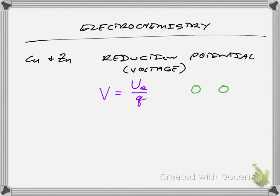Just like if we had two objects they have gravitational potential energy between them — using the example of the earth and a ball, that ball-earth system has gravitational potential energy so long as there are two masses. But if we talk about just the ball itself, there's no gravitational potential energy because it takes two objects. Similarly, if we have two charges there is an electric potential energy between them, but if we remove one of those charges there's no longer electric potential energy.